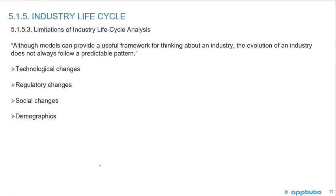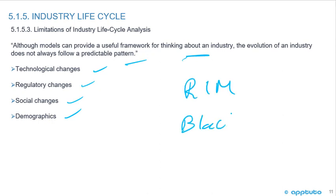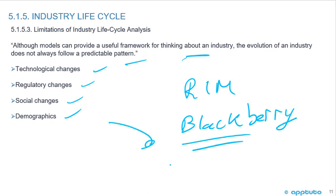The last part of this LOS covers limitations of industry lifecycle analysis. Although models provide a useful framework, the evolution of an industry does not always follow a predictable pattern. Factors include technological changes, regulatory changes, social changes, and demographics. A good example is Research in Motion and the BlackBerry — a very quick rise to fame and a very steep decline. Thank you.